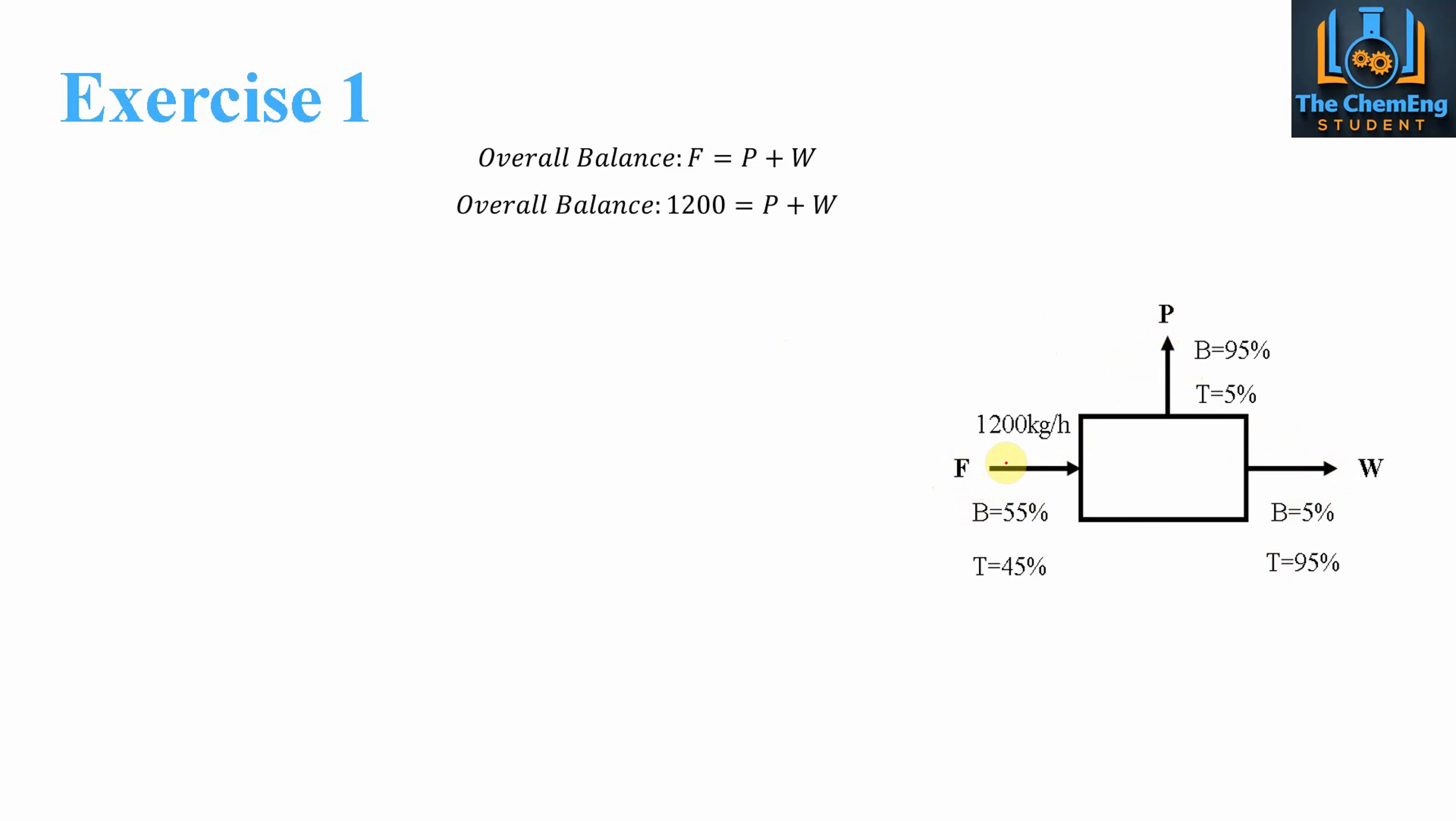Now what we can then say is once we have this equation sorted, we then need to perform a component balance. Now we'll balance benzene over the entire system. We know that benzene is 55%, so we'll do 0.55 multiplied by the feed. We know the feed is 1200, and that's equal to 0.95 in the top product plus 0.05 in the bottom product. Now when we substitute in the value of F, we get 660 as the flow rate of benzene.